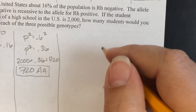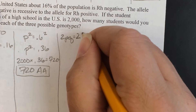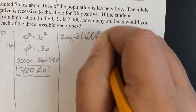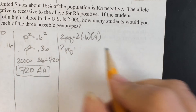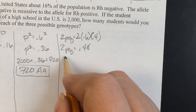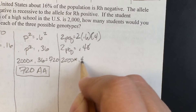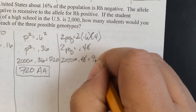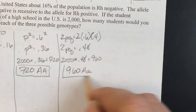For our heterozygous population, we use 2pq: 2 times 0.6 times 0.4, so 2pq equals 0.48. We take 2,000 times 0.48, and we get 960. So we have 960 anticipated to be heterozygous.